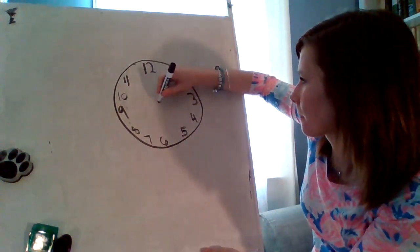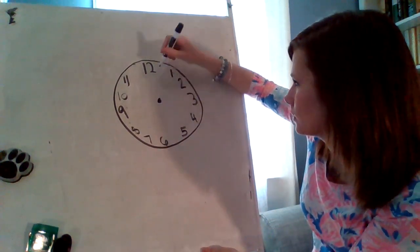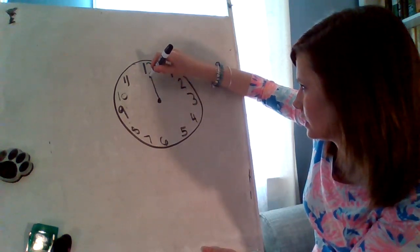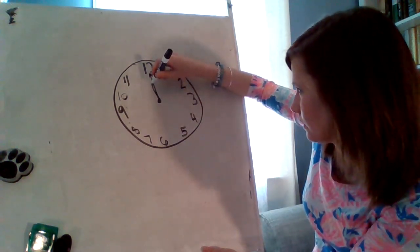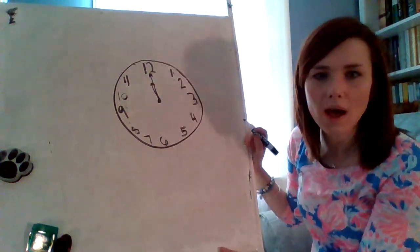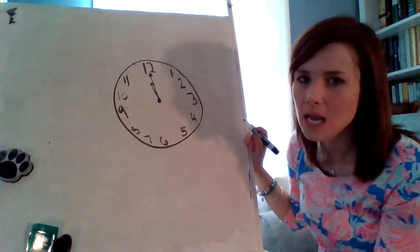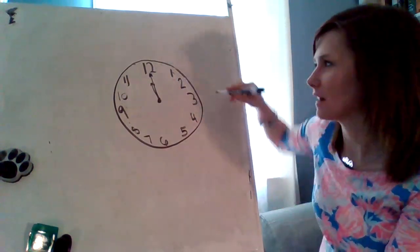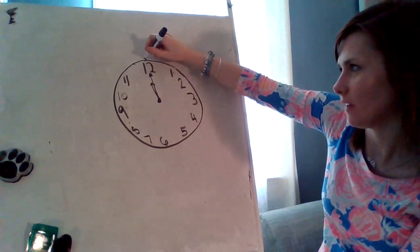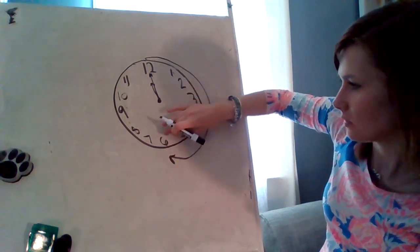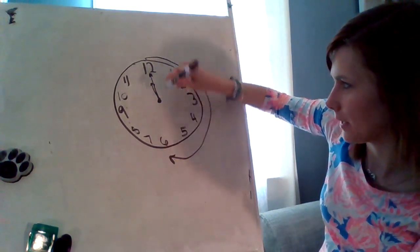We need to put our hands on it. It is 12 o'clock. Draw your long hand — your minute hand — and your hour hand pointing at the 12. Now, boys and girls, a half an hour passes. I want you to color in half of your circle. If a half an hour passes, that hand is going to go down. Color in half of your circle.